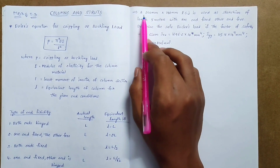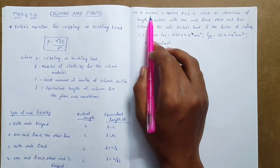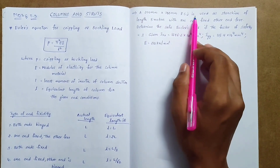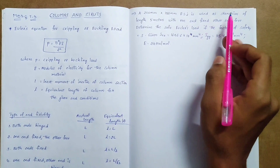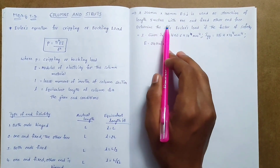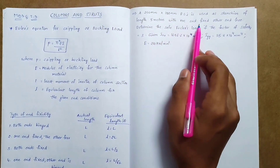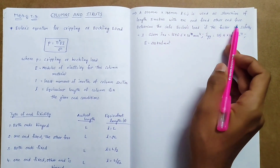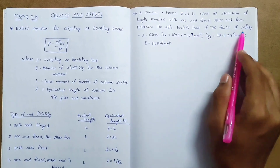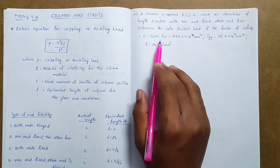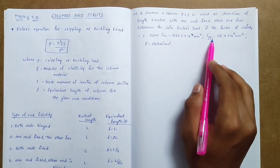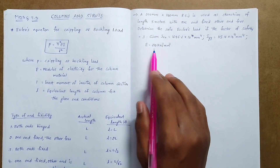Problem: A 200mm × 100mm RSJ is used as a stanchion of length 5 meters, with one end fixed and the other end free. Determine the safe Euler's load if the factor of safety is 3. Given: IXX, IYY, and E.